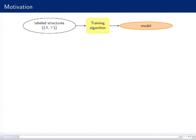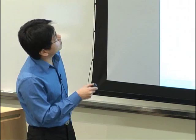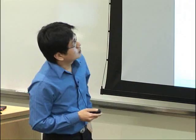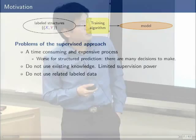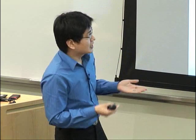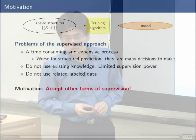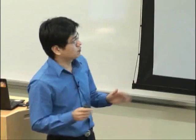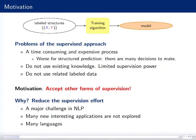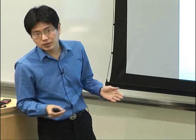The standard supervised training algorithm uses labeled data, feeds it to a training algorithm, and builds a model. The problem is this is time-consuming and expensive, and it's worse for structure prediction where you have many decisions to make. It also doesn't use existing knowledge or related labeled data. The motivation of today's talk is to find a way to accept other forms of supervision — to develop a principled machine learning approach that can accept other forms of supervision — so we're not limited to only labeled data. This is one of the major challenges in NLP, because there are many new interesting applications not yet explored due to lack of supervision.